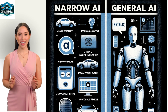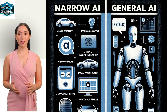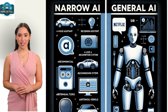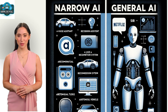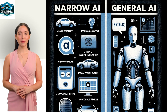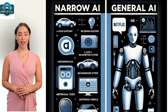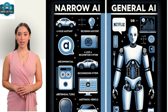On the other hand, general AI, or strong AI, is a theoretical form of AI where machines have the ability to understand, learn, and apply knowledge across a wide range of tasks, just like a human being. General AI remains a concept for now, as we are yet to create machines with such capabilities.